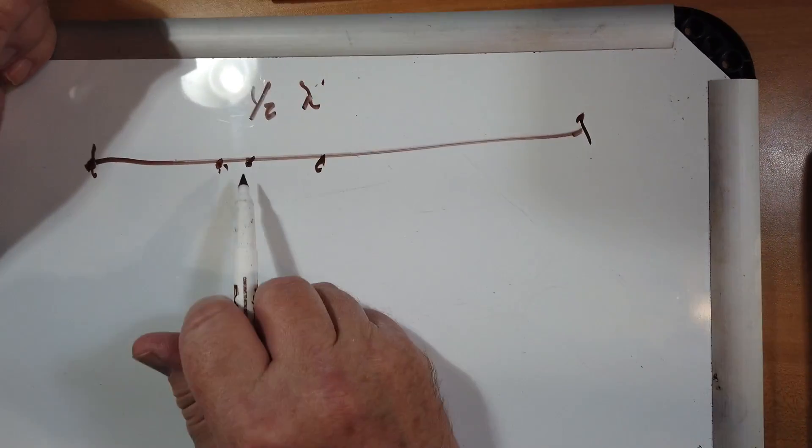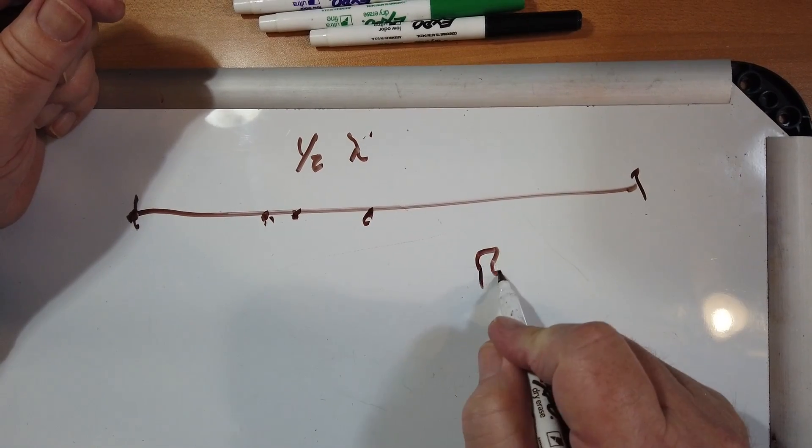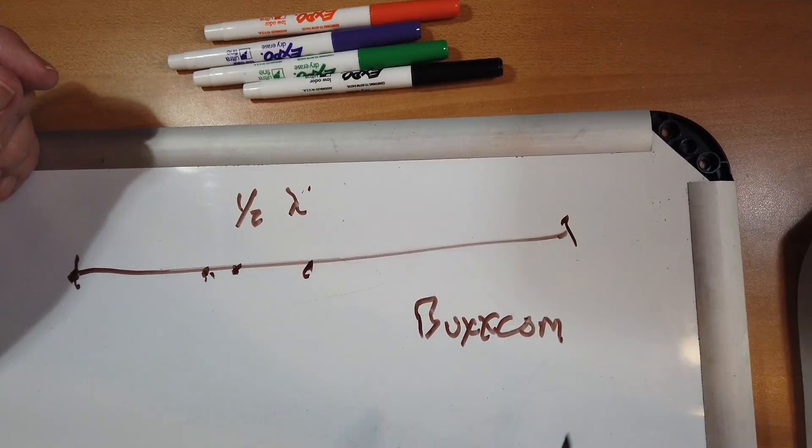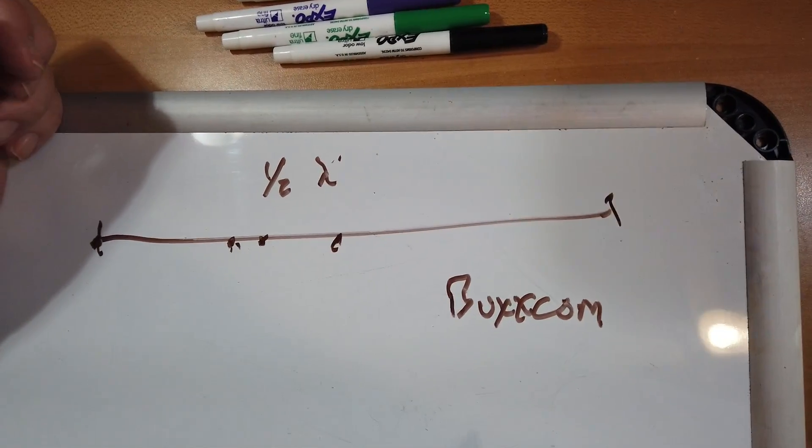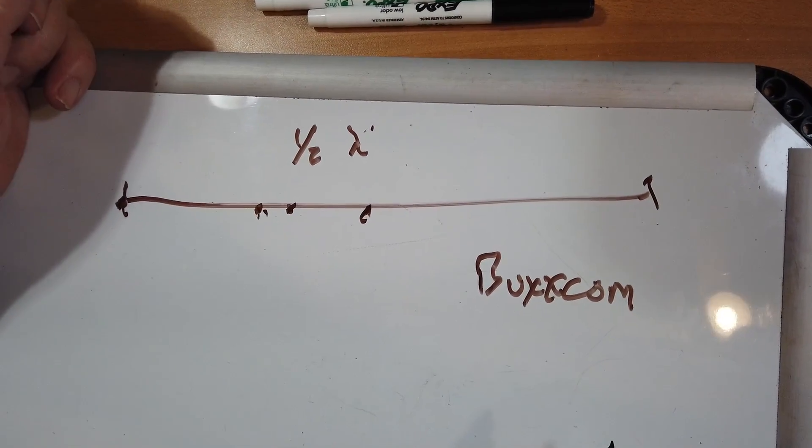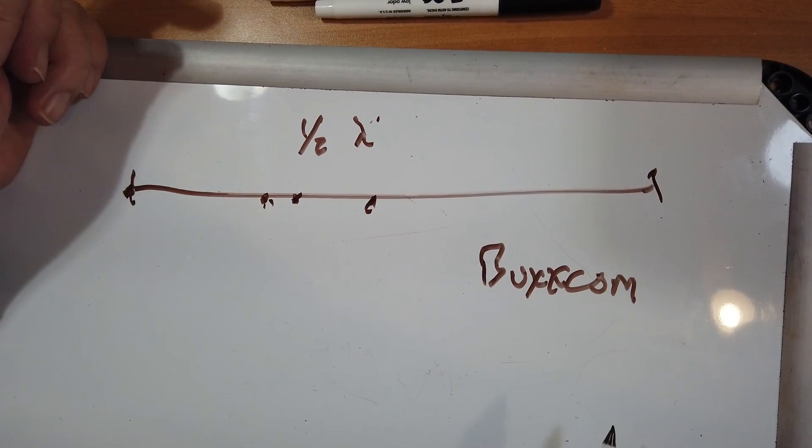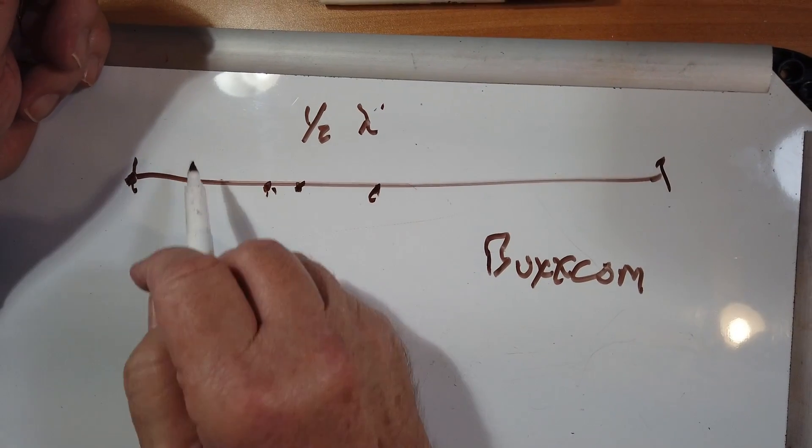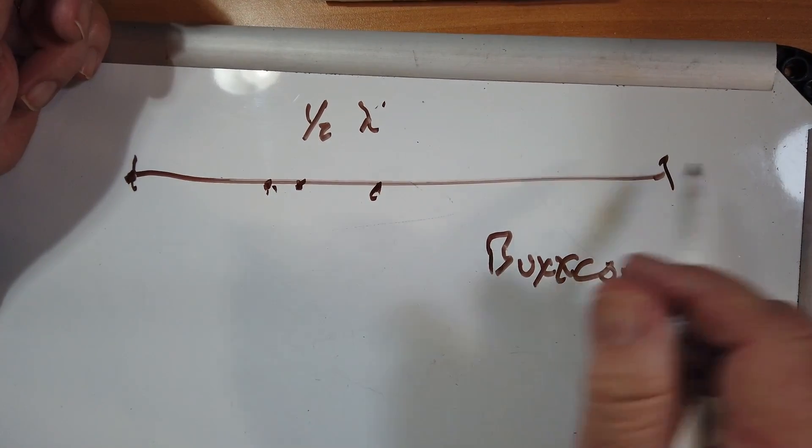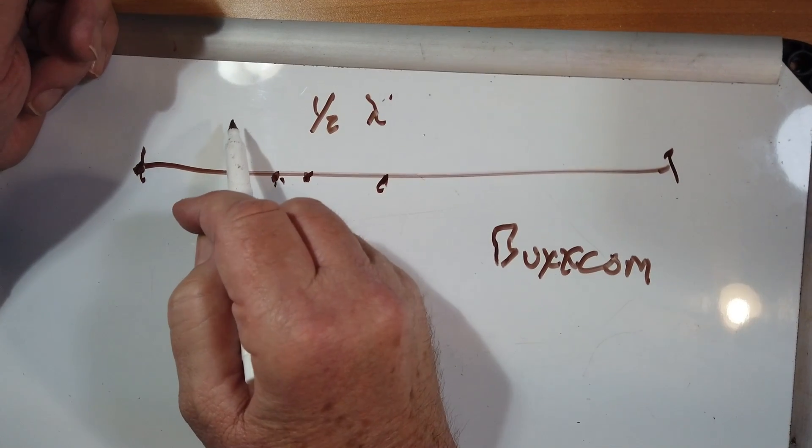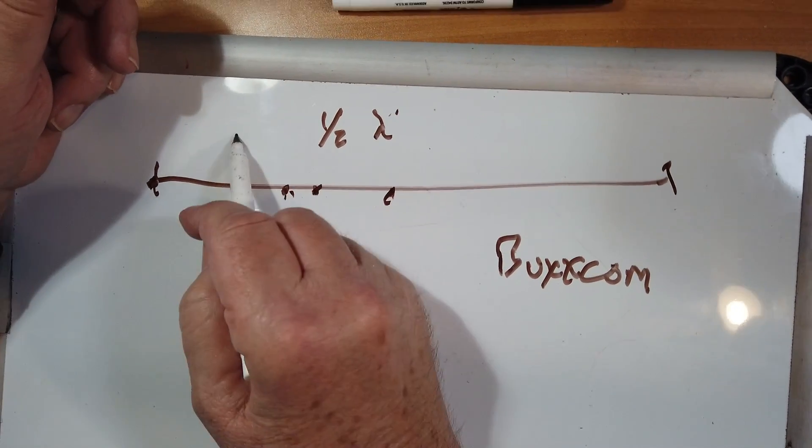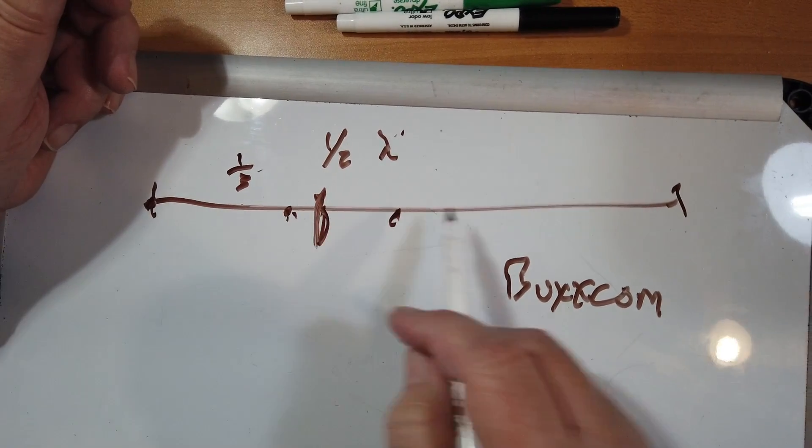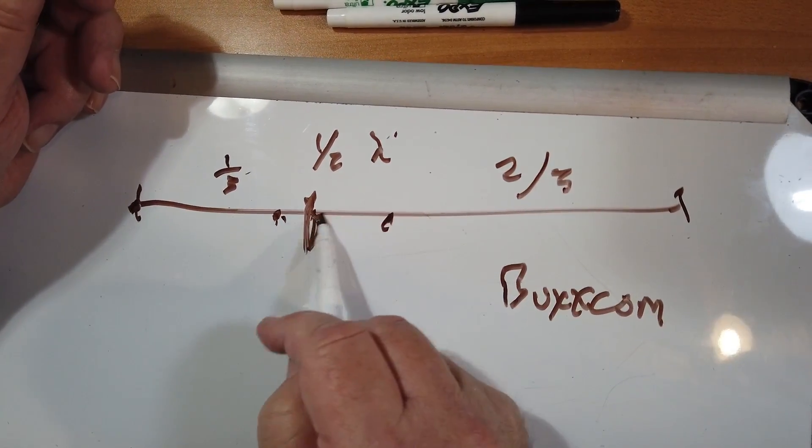Now you've got an off-center-fed dipole you call a Buxcom. I looked that up on the internet and really couldn't find anything. So I'm just going to assume it's a fairly conventional off-center-fed dipole. Now, the one that I have, which happens to be the reference antenna, is 66 feet long, and it is one-third on this side of the break, and then two-thirds on the other.